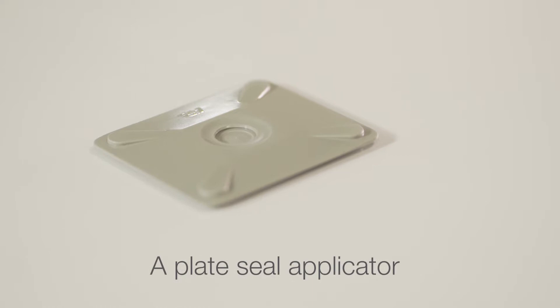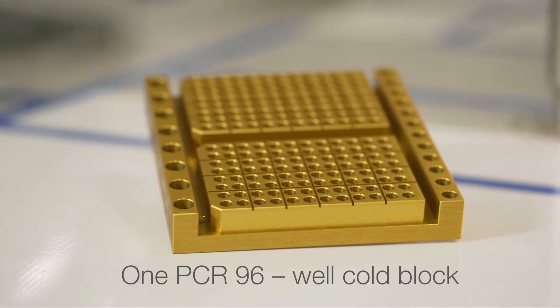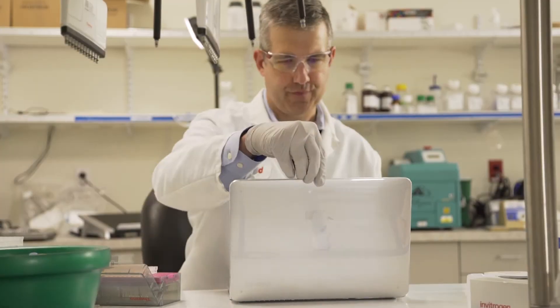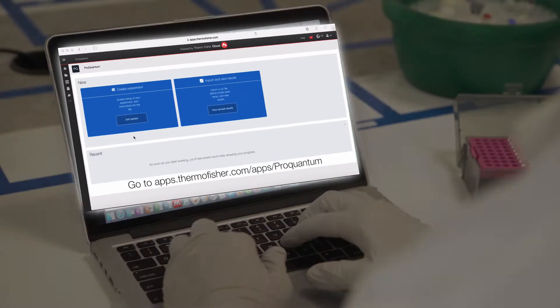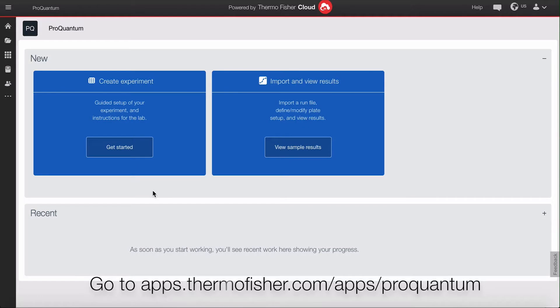A plate seal applicator and a PCR 96-well cold block to keep the reagents in the working plate cold. We will first show you how to use the ProQuantum Cloud app to help set up your assay.